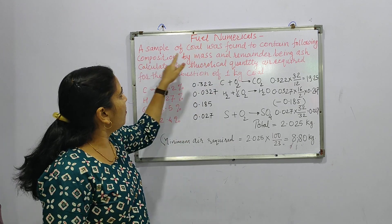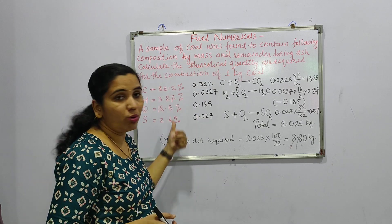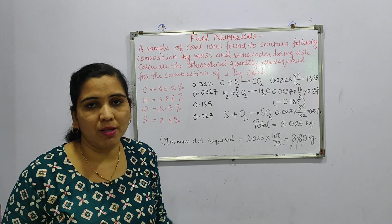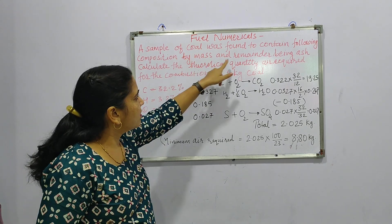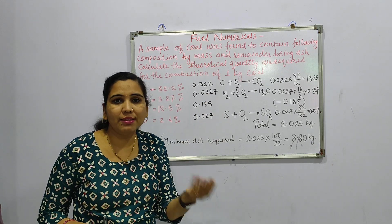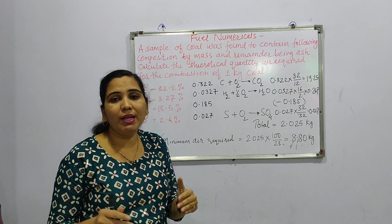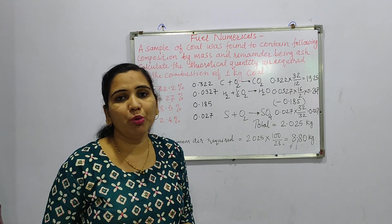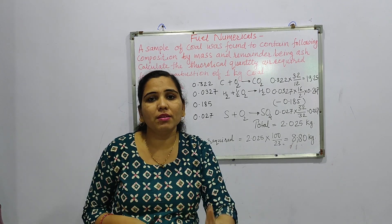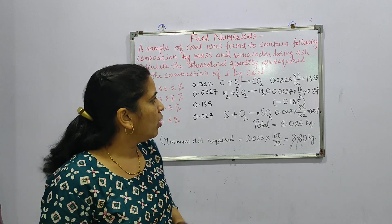A sample of coal was found to contain the following composition by mass. This composition is given by mass, meaning it is in terms of weights in kilograms. The remainder is ash. Whenever coal is considered as a fuel, it is a solid fuel, and ash remains as a byproduct.